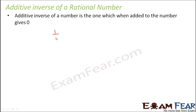For example, you have a rational number 1/2. Do you think there can be a number which when added to 1/2 gives you 0? Let's say you have 10 rupees — how much should you have so that your net balance becomes 0? In that case you will have to spend those 10 rupees. So basically 10 plus minus 10 becomes 0. Similarly, 1/2 plus minus 1/2.